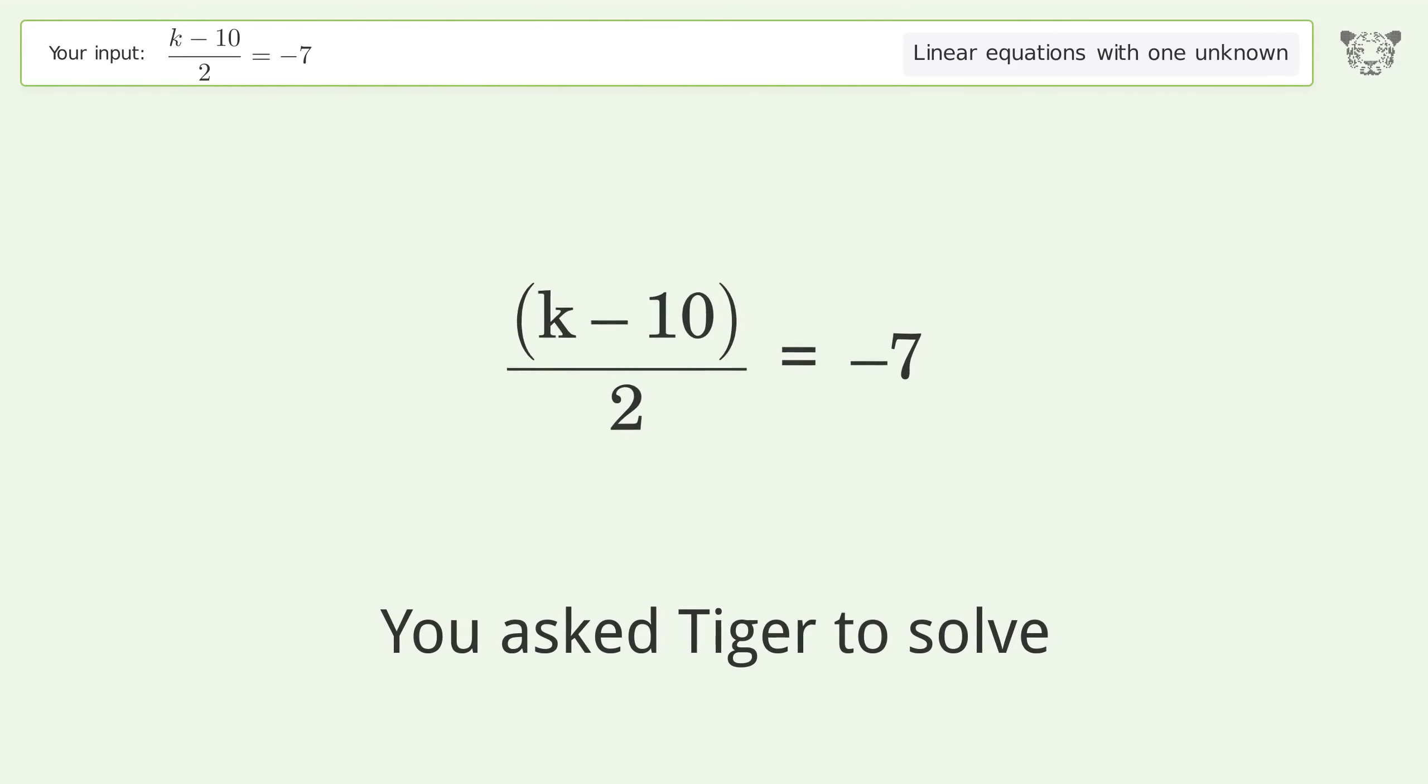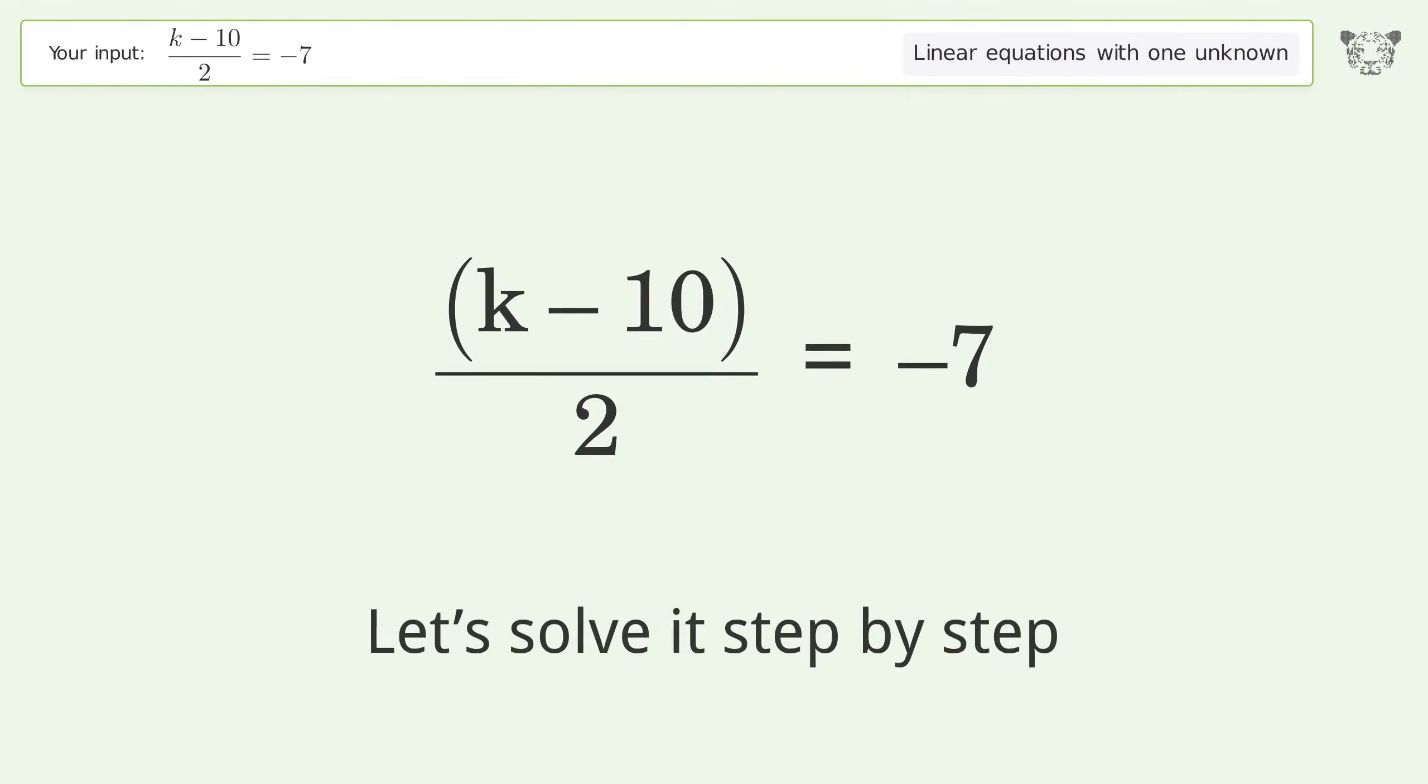You asked Tiger to solve this linear equation with one unknown. The final result is k equals negative 4. Let's solve it step by step and simplify the expression.